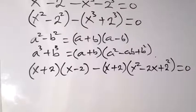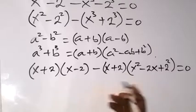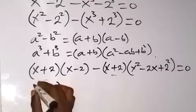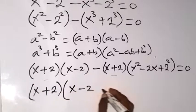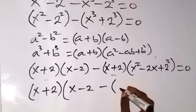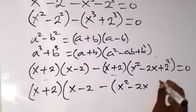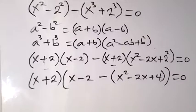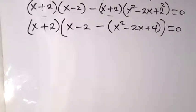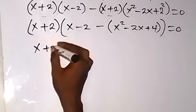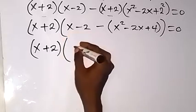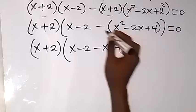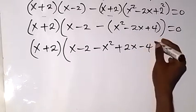So by the time we simplify this now, we can see we have these two expressions on this side. Then x plus 2 is common. When we take it out of the bracket, we have x plus 2 out, then what is left here is x minus 2, then minus x squared minus 2x, and 2 squared here is 4, that's plus 4. Then inside this bracket we have x minus 2. When we use this minus to open this bracket, we have minus x squared, then plus 2x, and minus 4, then equals 0.